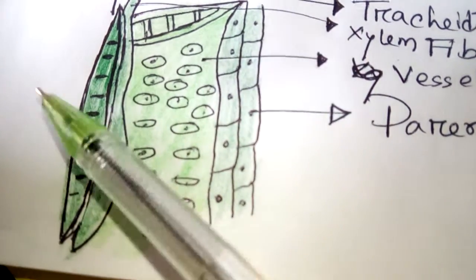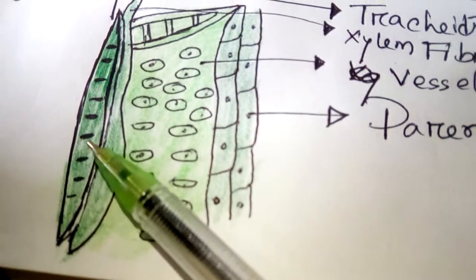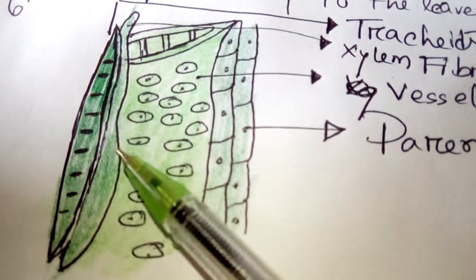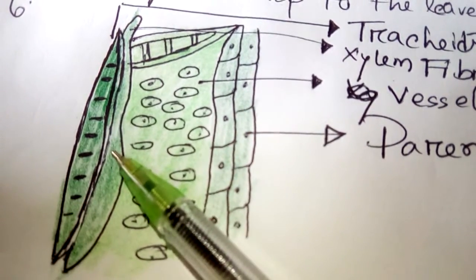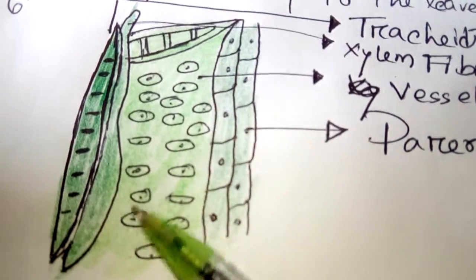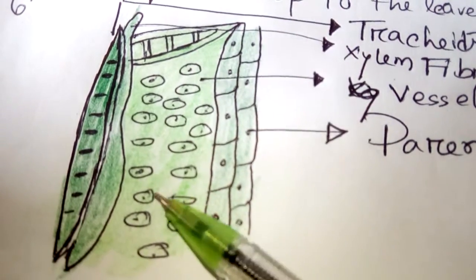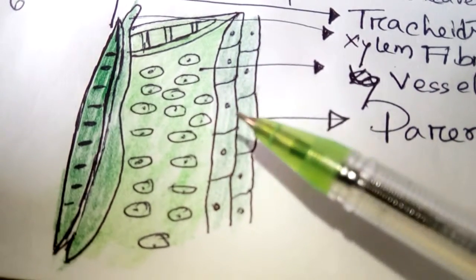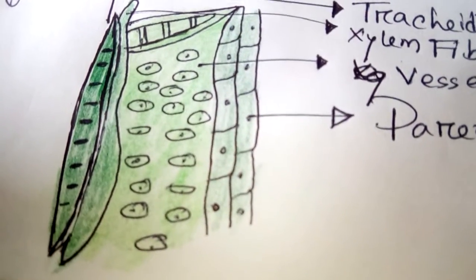Okay, let's read again. This is tracheid. This is xylem fiber. And this is vessel cell, water transports through vessels. And this is parenchyma. This is xylem parenchyma. Okay, let's read about phloem cells.